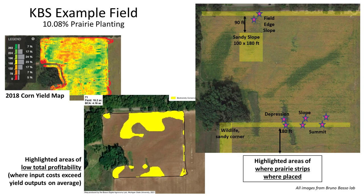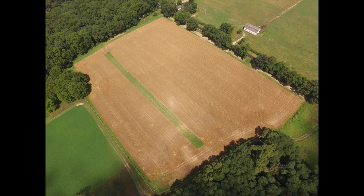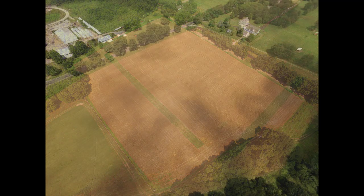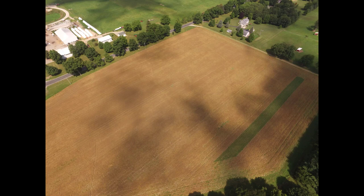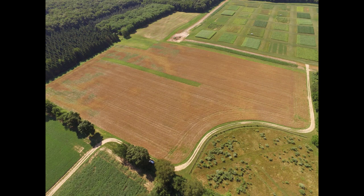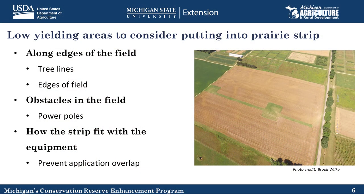We've also looked for sites that have obstacles in the fields, such as power poles, that when we farm around them typically result in overlap of applications and inefficiency in farming. One final thing we considered when installing our prairie strips is how they might fit with our farming equipment, because every farm has different sized equipment. Ideally, you don't want to put a prairie strip in a field where it might result in overlap in your seeding.